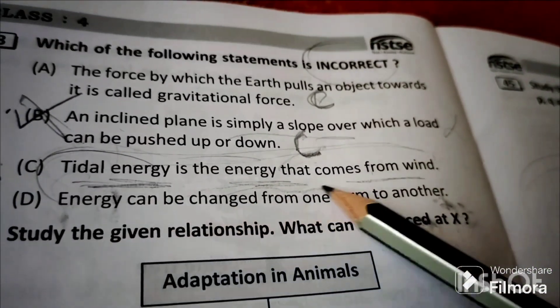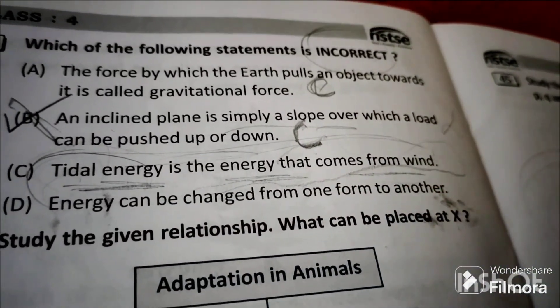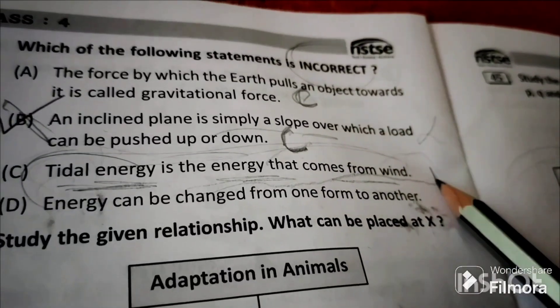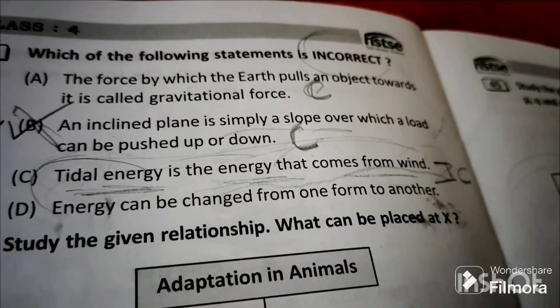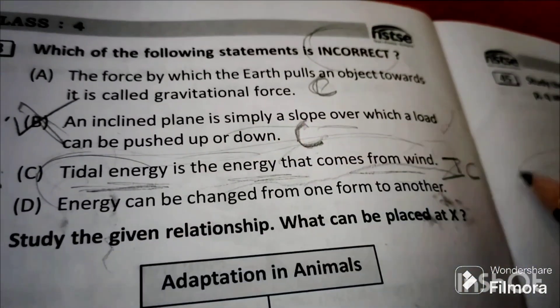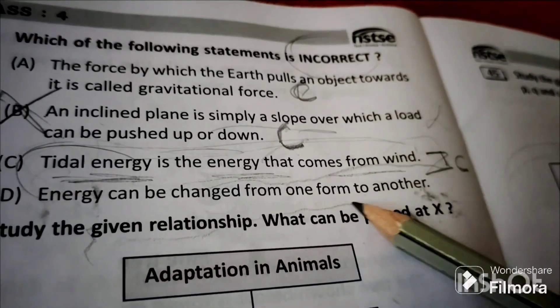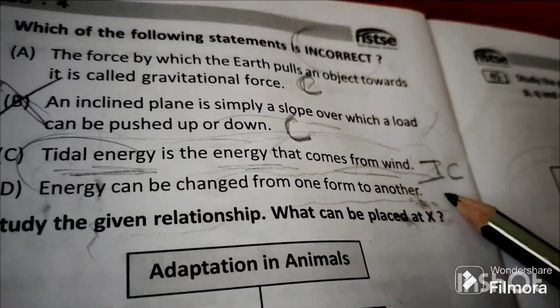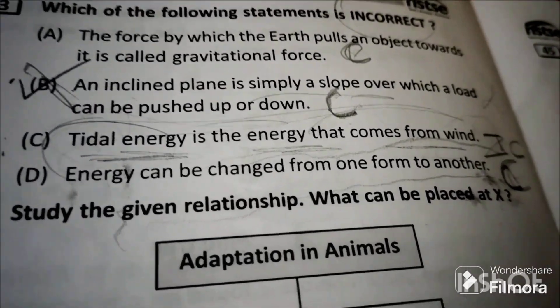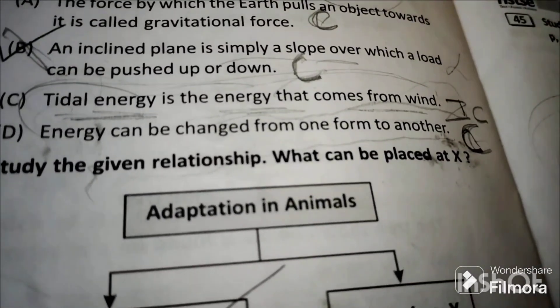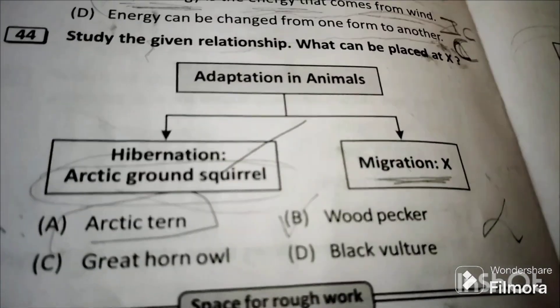C: Tidal energy is the energy that comes from the wind. No, this is incorrect because wind energy comes from wind. Tidal energy comes from tides, from water tides. D: Energy can be changed from one form to another. Correct. Example: chemical energy stored in the battery can be converted into electrical energy.